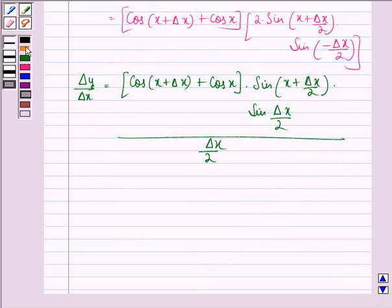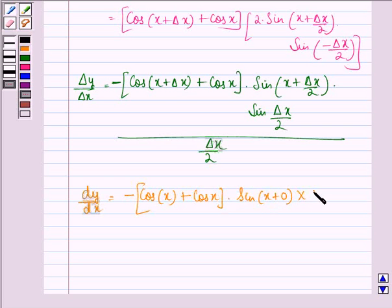Now, taking the limit as delta x approaches 0, dy by dx equals minus cos x, since delta x becomes 0, plus cos x, times sin x plus 0, times 1. This is because the limit of sin delta x by 2 divided by delta x by 2 as delta x approaches 0 equals 1.